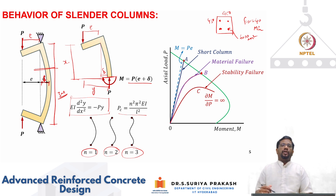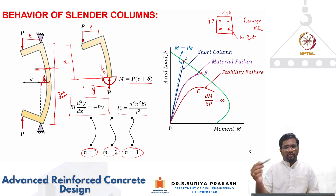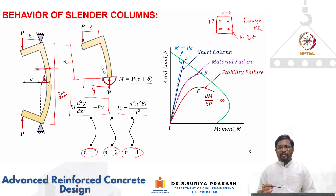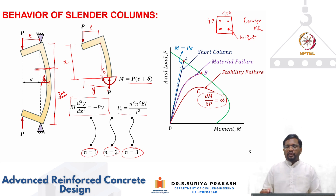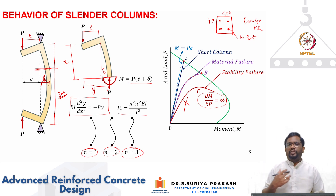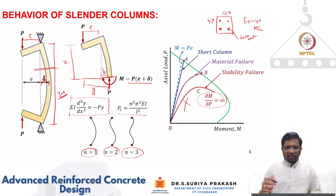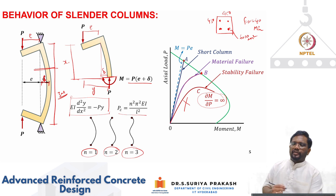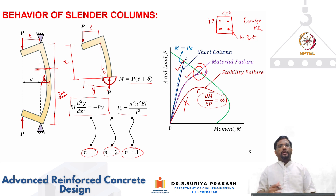Before reaching material failure, the slope becomes zero and dP/dM = 0, leading to a stability failure. The code does not allow this kind of failure, which is why maximum slenderness ratios have been specified as per IS 456. A moderately slender column is allowed to be designed, but excessive slenderness leading to stability failure is not. For a moderately slender column, the same column fails at a lower axial load, and by virtue of P-delta, it takes more bending moment at failure.